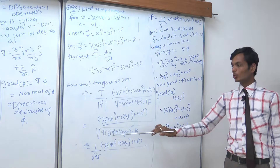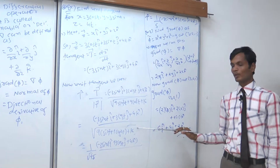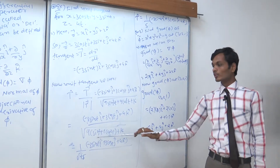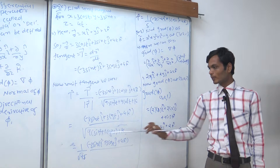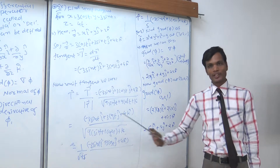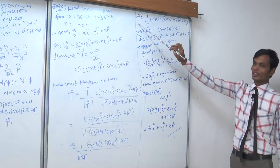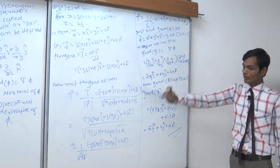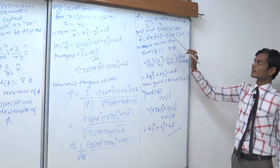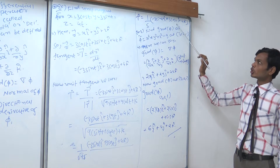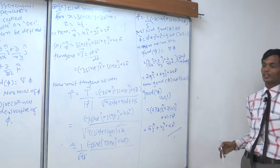Taking 9 outside: √(9(sin²t + cos²t) + 16). Since sin²t + cos²t = 1, this gives √(9 + 16) = √25 = 5. So the unit tangent vector equals (1/5)(−3sin(t)i + 3cos(t)j + 4k).